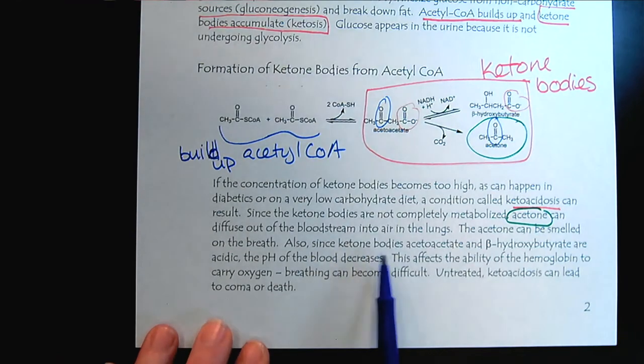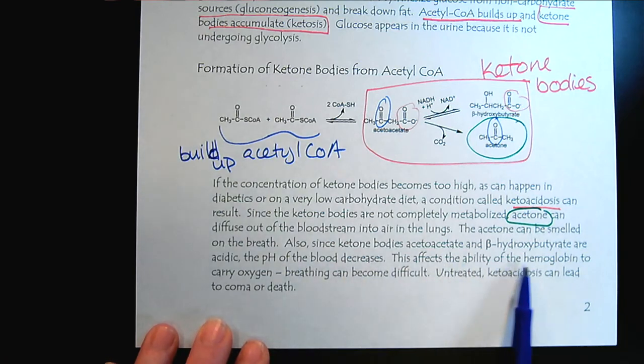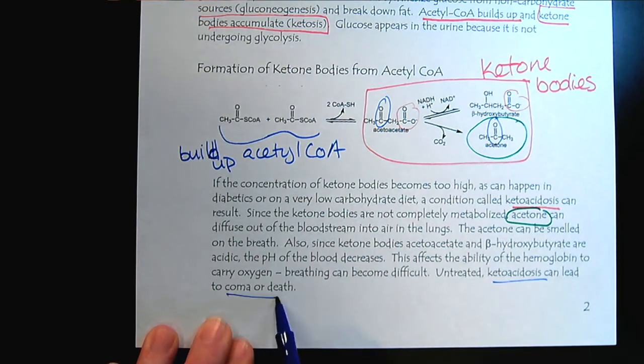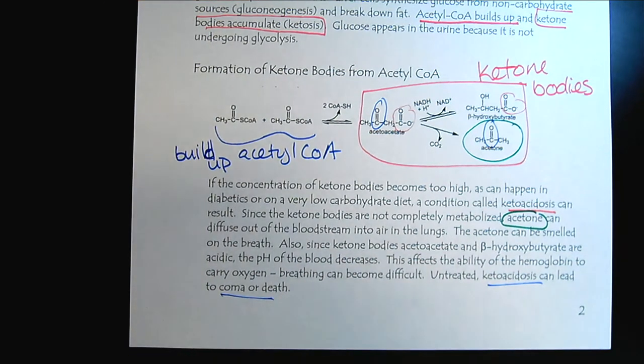The pH of the blood decreases, which affects the ability of hemoglobin to carry oxygen and breathing can become difficult. Ketoacidosis can actually lead to coma or death. The lack of glucose metabolism leads to the formation of ketone bodies, which in the short term provide energy but have long-term health effects. Please take some time now to work a few homework problems to reinforce your understanding.